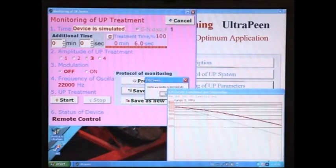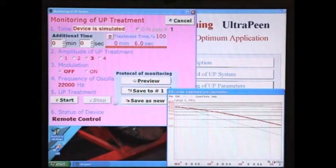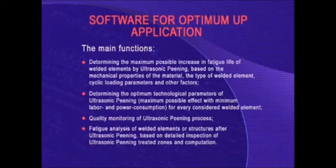The software is based on an original predictive model. The main functions of the software are quality monitoring of ultrasonic peening process and fatigue analysis of welded elements or structures after ultrasonic peening based on detailed inspection of ultrasonic peening treated zones and computation.